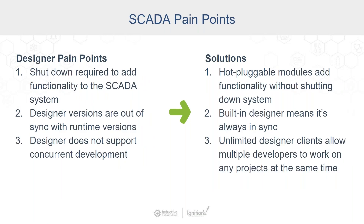Let's move on to some designer pain points. Similar to what we mentioned before, there's requiring a shutdown to add functionality to the system. Another pain point is if the designer versions are out of sync with runtime versions. And it can be frustrating if the designer does not support concurrent development, so only one person on the team can develop at a time. Ignition solves these by being hot-pluggable for its modules — you can add modules on the fly without having to restart your gateway.